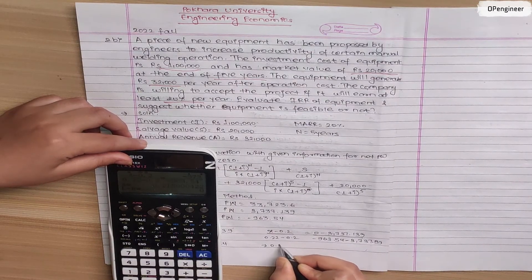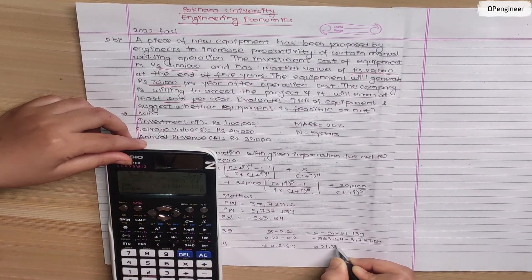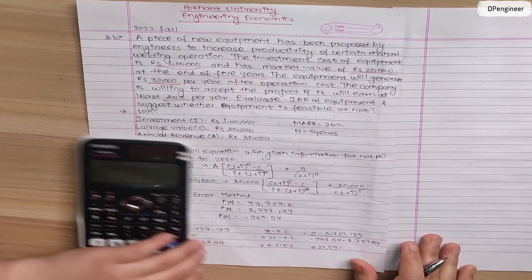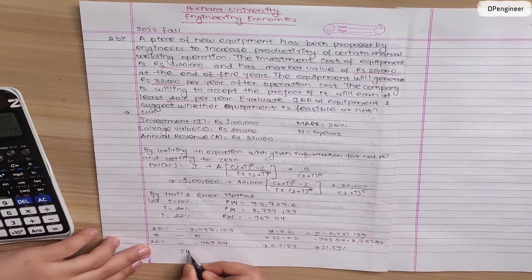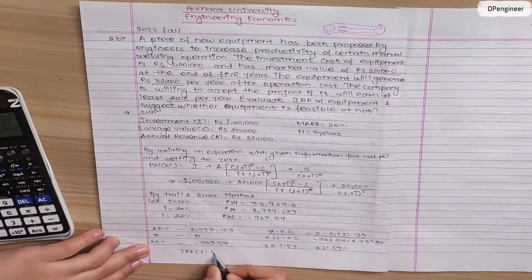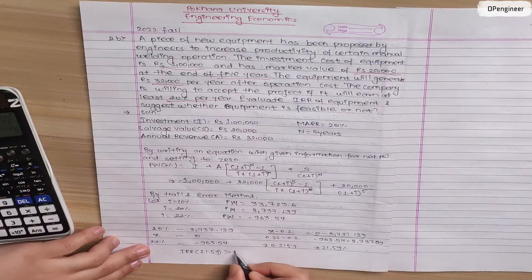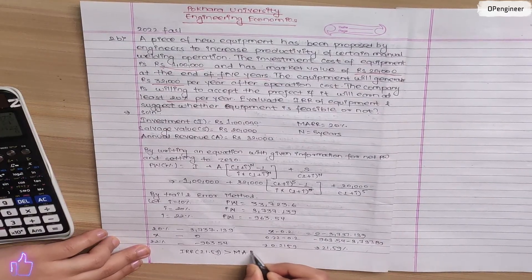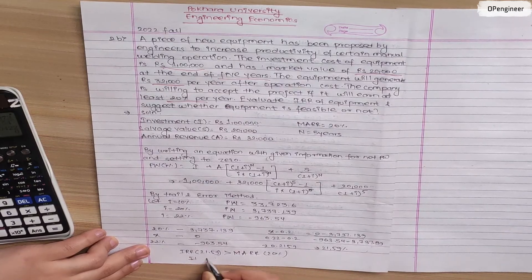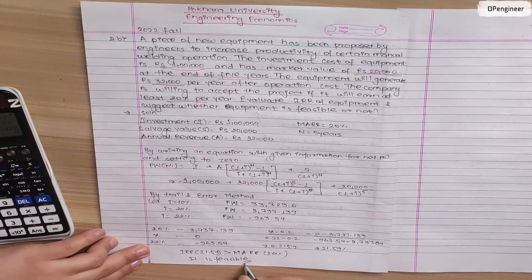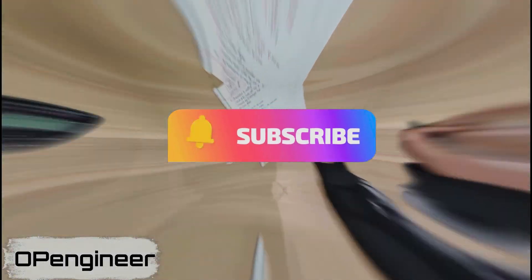The IRR is 21.59% and the required rate is 20%. So IRR is greater than required rate, therefore it is feasible. So that's it, thank you.